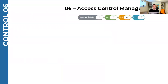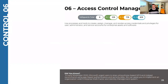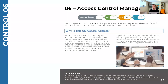Control six is access control management. To tie off with what we just talked about: once you have accounts set up, you need to give levels of permission or privilege to people on your network. These are done in concert with each other, and enforcing strong authentication is part of this.